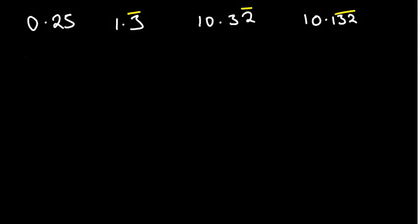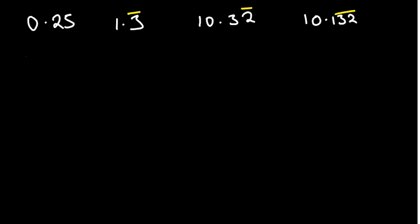We're going to understand how to convert decimal numbers, especially recurring ones, to fractions. Look at these four different cases, beginning with the simplest. The last one has a bar only on 3 and 2, meaning 3 and 2 are recurring — they are not ending. We'll work through all four cases and convert them to fractions.